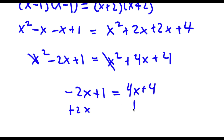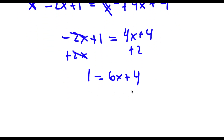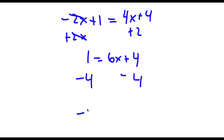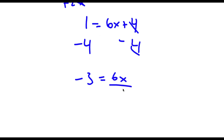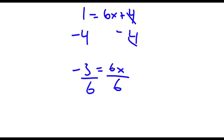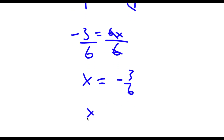Now I can add 2x on both sides, so I get 1 is equal to 6x plus 4. Now if I subtract 4 on both sides, I get negative 3 is equal to 6x. And now if I divide by 6 on both sides, I'm left with x is equal to negative 3 over 6, which is equal to negative one half. So x is equal to negative one half. This is our answer.